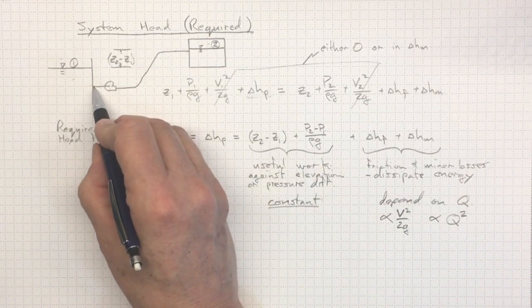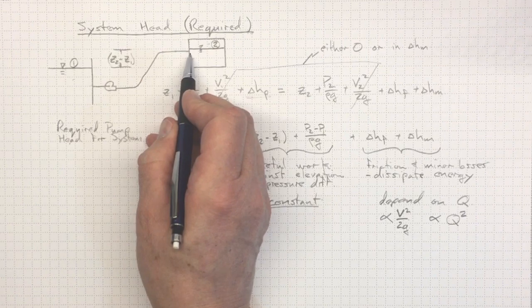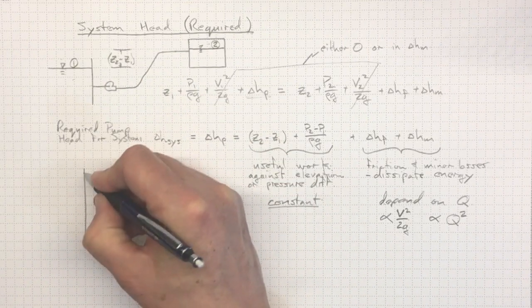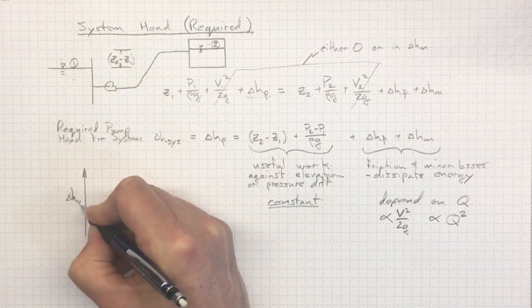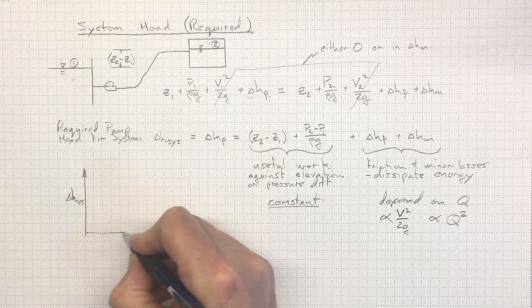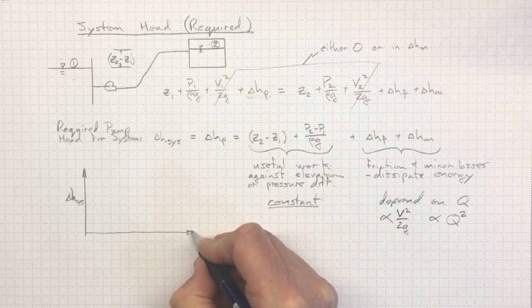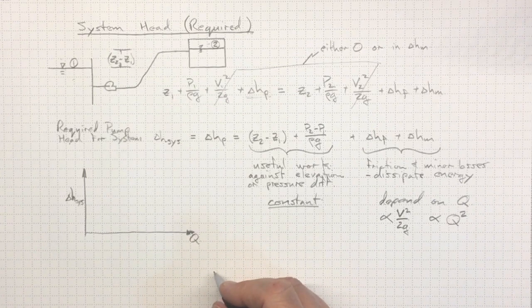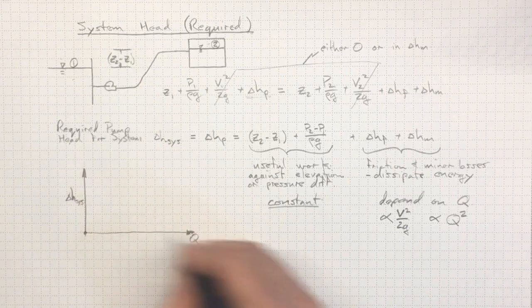So, let's think about what this system head rise looks like for different flow rates. Now, we can draw a graph like this. We'll put delta H cis on the vertical axis, and flow rate out here on the horizontal axis. Now, if we have no flow, there'll be no losses.